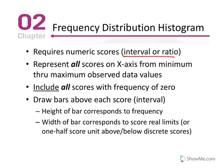Represents all scores on the x-axis for minimum through maximum observed data values. Include all scores with frequency of zero. In other words, we have our x values here and frequency. So even if a value, if we have our zero, one, two, three, four, even if the score of three was zero, it's still included. So if one occurred twice, two occurred once, three occurred zero times, and four occurred three times, it's still included even if it has a frequency of zero.